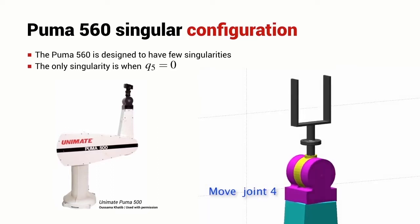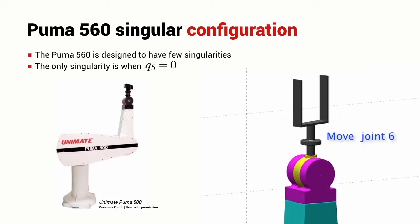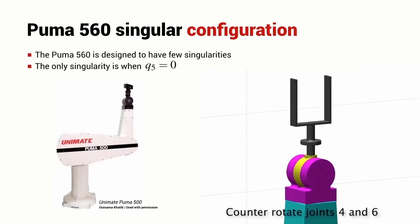If we rotate joint four, we can see how the robot end effector moves. If I move joint six, we see that the end effector motion is exactly the same as that due to joint four. Now, if I rotate joints four and six in opposite directions, they cancel each other out. They're both moving, but the end effector is not moving at all.